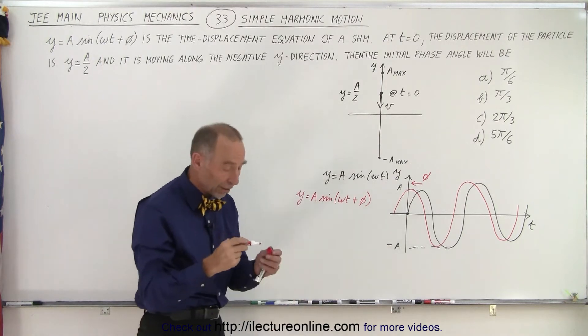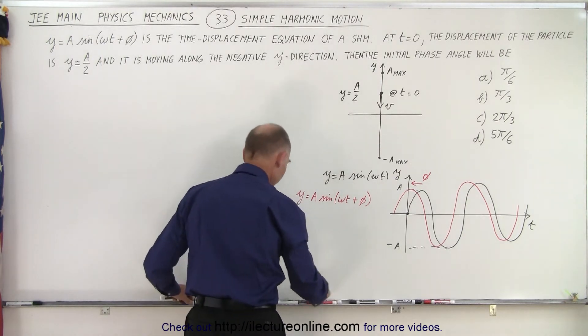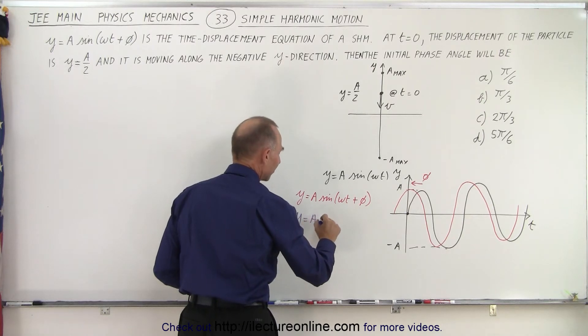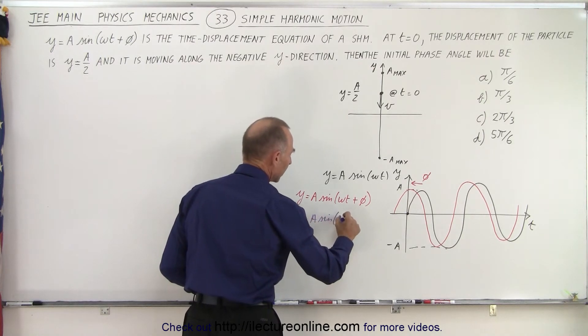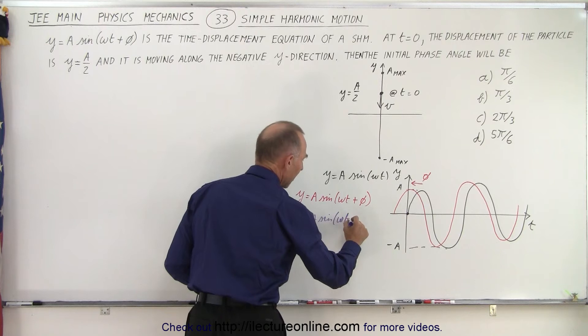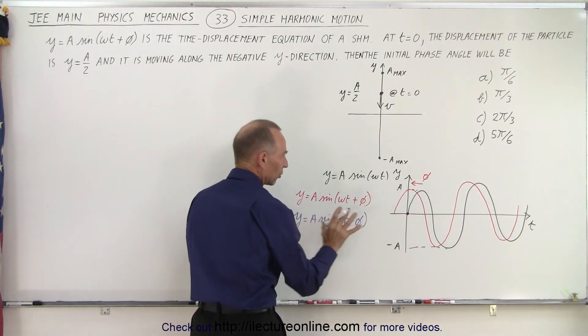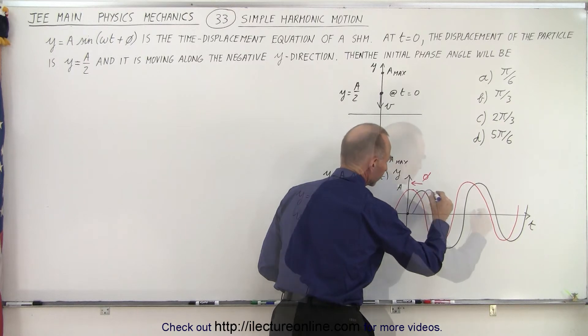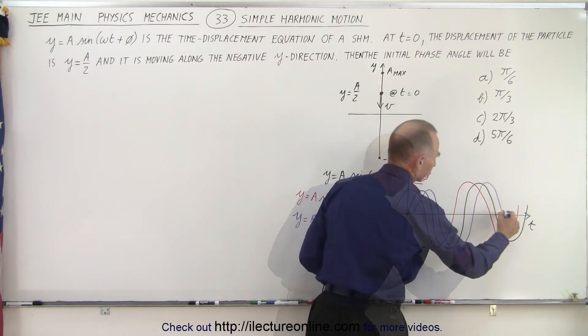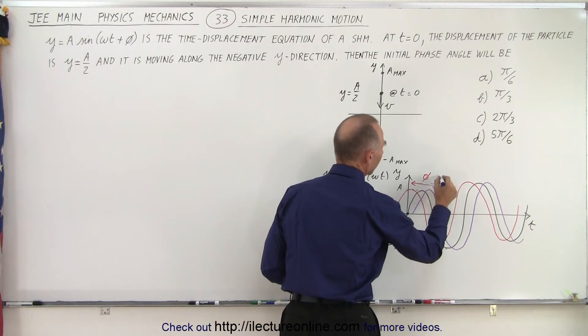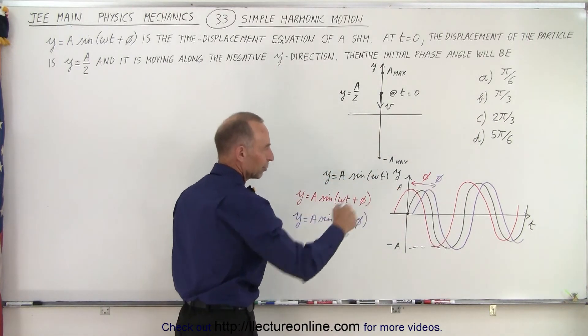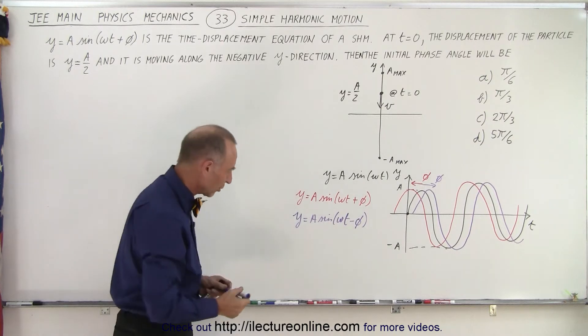Now, what if it's a negative? Y equals a times the sine of omega t minus phi. That shifts everything to the right, so that graph would look like this, it would shift everything to the right by phase angle phi. So depending upon what sign we use, it moves to the left or to the right.